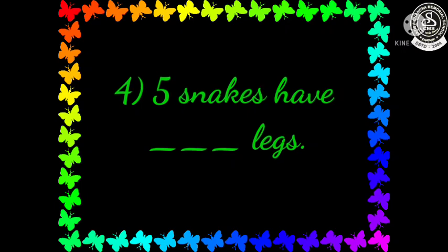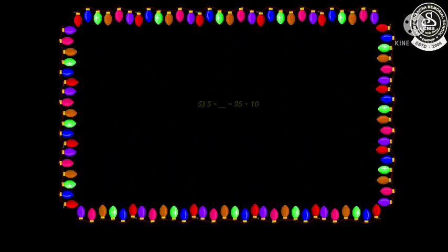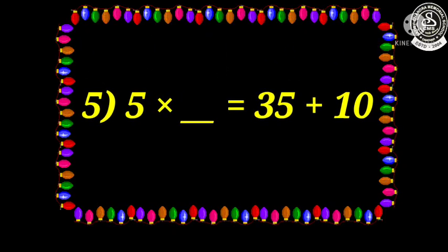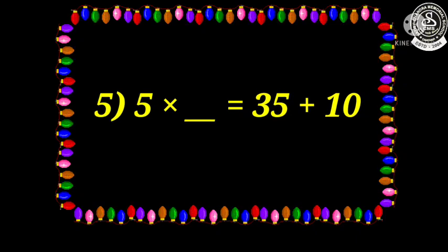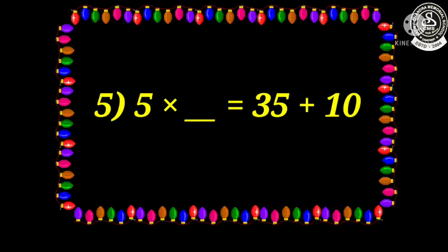Next, question number five: five multiplied by dash equals 35 plus 10. Children, first you will solve the right side, and then I think you will easily get the answer — that in five, how much you have to multiply.